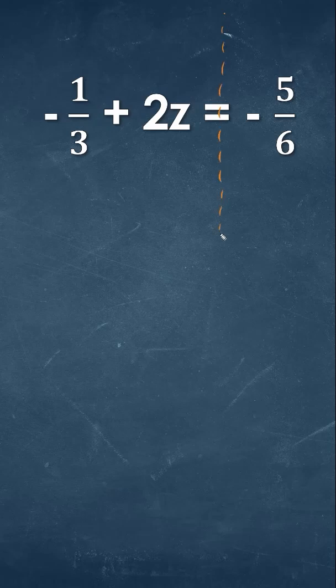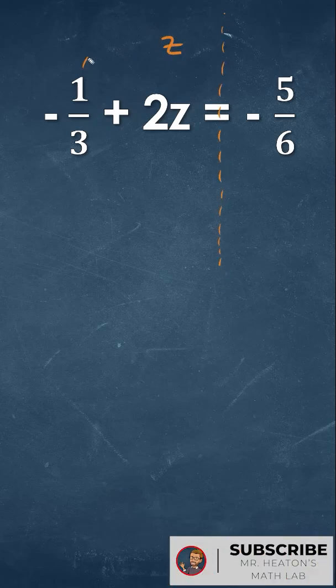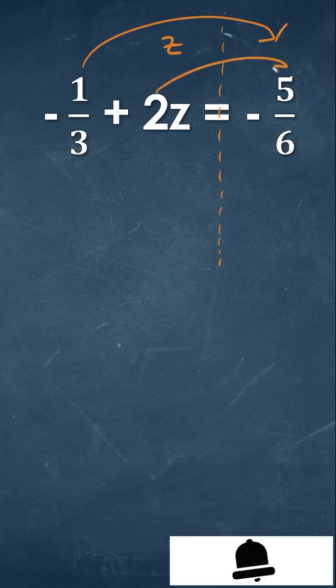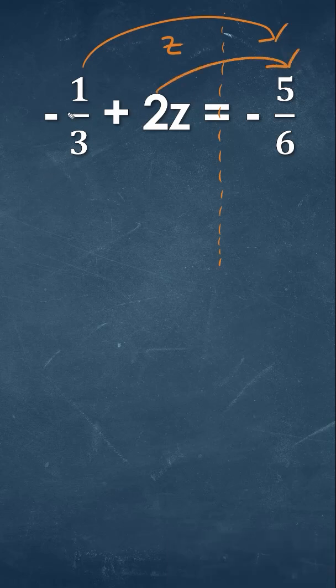Whenever we're trying to solve for a variable, in this case z, we want to have that letter on one side and all our numbers on the other side. We always start with what's easiest, which is addition and subtraction, and we move this over by doing the opposite of what we see.